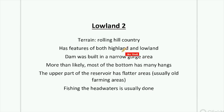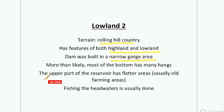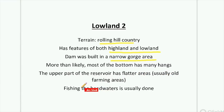Lowland 2 is also rolling hill country. It has features of both highland and lowland reservoirs. The dam was built in a narrow gorge area, and the bottom will more than likely have many snags. The upper part of the reservoir has flatter areas, which usually means it's an old farming land area. The key to fishing a Lowland 2 is going to the headwaters.